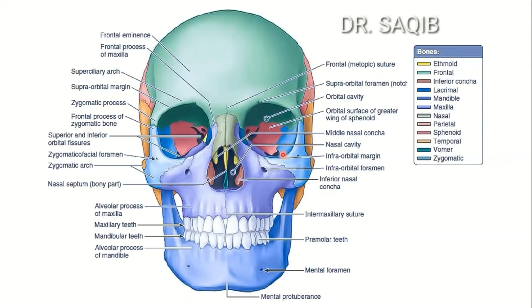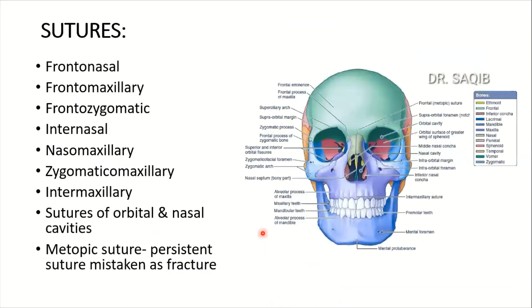The orbital cavity and the alveolar socket of the maxilla for the mandibular teeth are also visible. Now sutures — very interesting. You might see this long list of sutures and wonder how to remember them, but it's very simple. Three sutures involve the frontal bone. This is the frontal-nasal suture, and then there is the frontal-maxillary and the frontal-zygomatic suture.